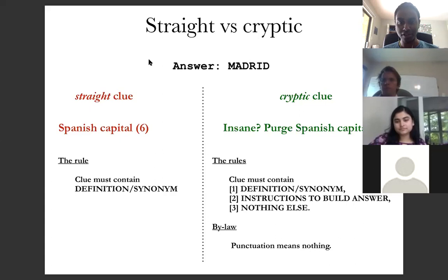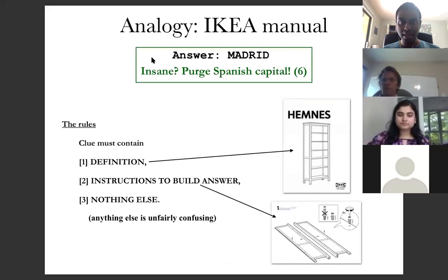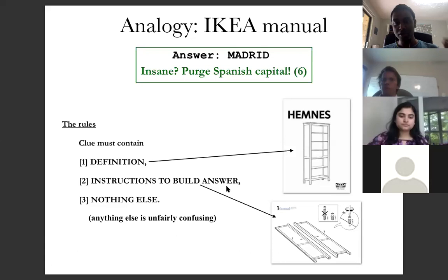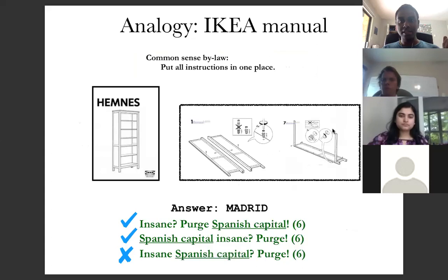This is fairly analogous to a DIY manual, like an IKEA manual. In the manual, where you want to build some furniture, you need a picture of what you're actually going to build, but you also need instructions to build it, and finally you don't want anything else in the manual because it's just confusing. To give a fair clue you need just the instructions and the definition. Furthermore, in a manual you want all the instructions in one place — you show the final picture either at the beginning or the end, not somewhere in the middle of the instructions.